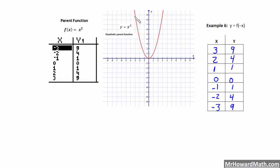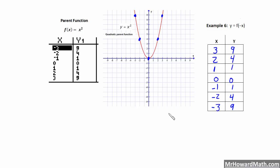Because we're applying that reflection to this parent function, which already has symmetry — it's an even function with symmetry to the y-axis — it's actually going to end up looking exactly the same. For example, the original point (2, 4) becomes (negative 2, 4), which just lays on top of itself. Similarly, (3, 9) flips over to (negative 3, 9), which also lays on top of itself. So there's really no change to the graph when we apply this to the quadratic parent function, because it already had symmetry to the y-axis. That one was pretty easy.